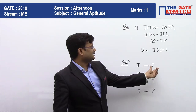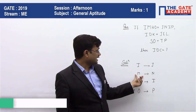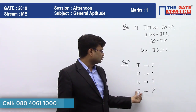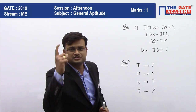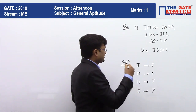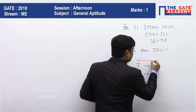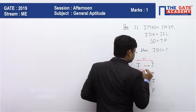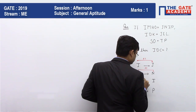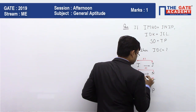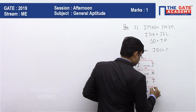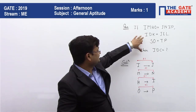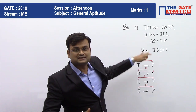So I is getting converted to J, M is getting converted to N, H is getting coded to I, and O is getting coded to P. If you closely observe, each letter is being replaced by the next alphabet. The same thing is happening with the other examples as well.